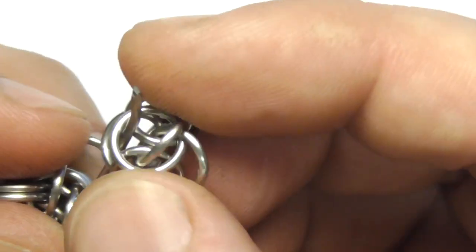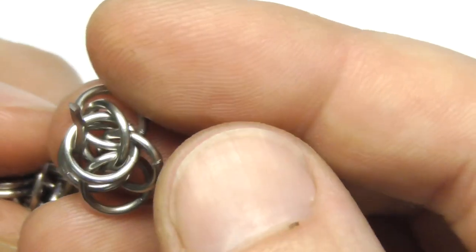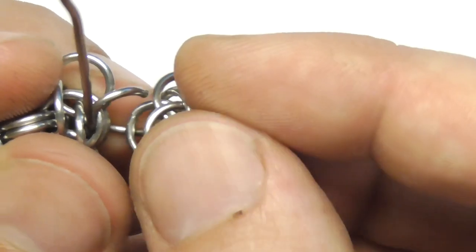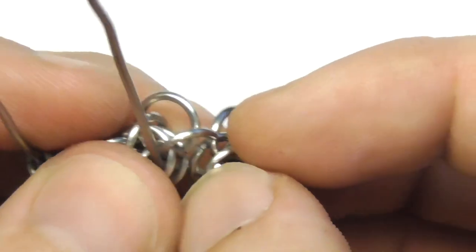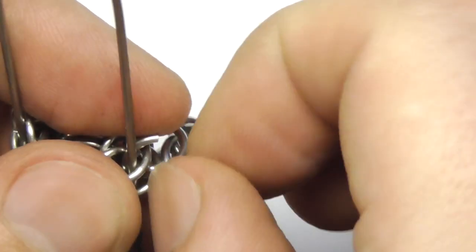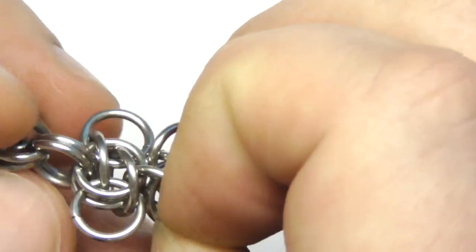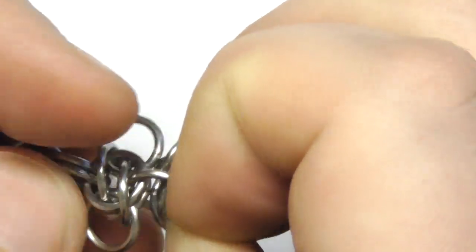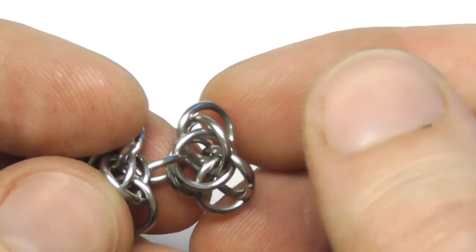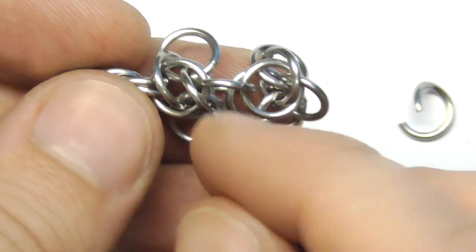So our ring will go here through these two rings. Let's close the ring. Okay, now just let's double this ring.